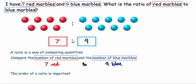And it is usual to write the ratio in its simplest form, which this is, since nothing greater than 1 will divide both 7 and 9. So the ratio of red marbles to blue marbles is 7 to 9.